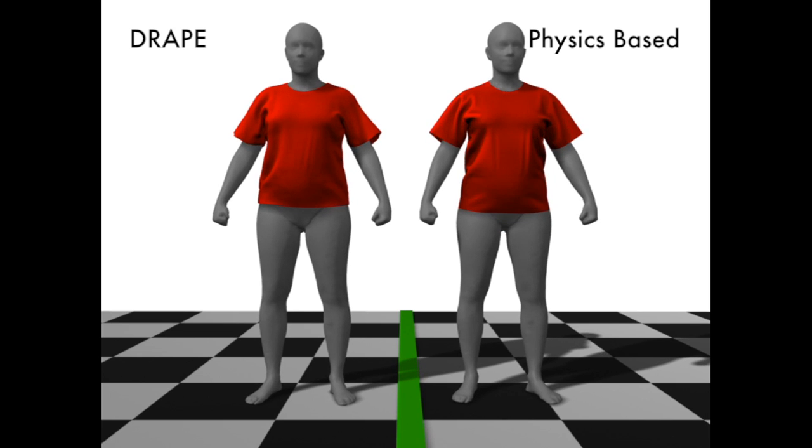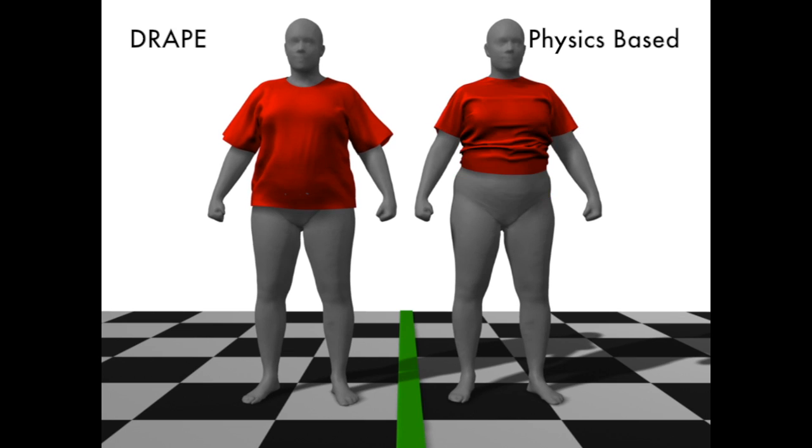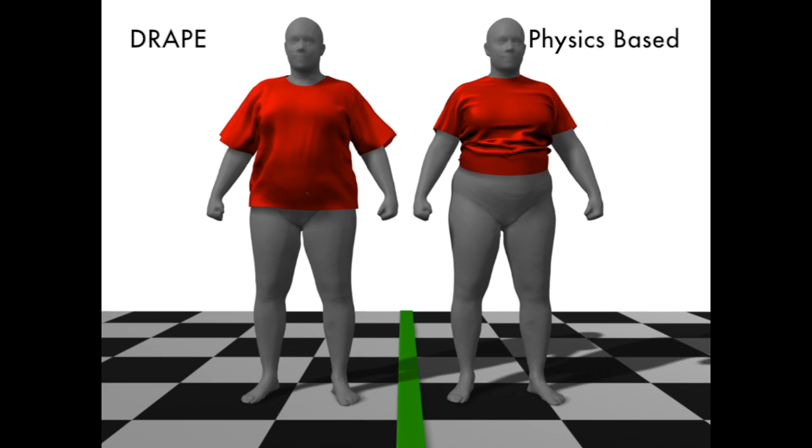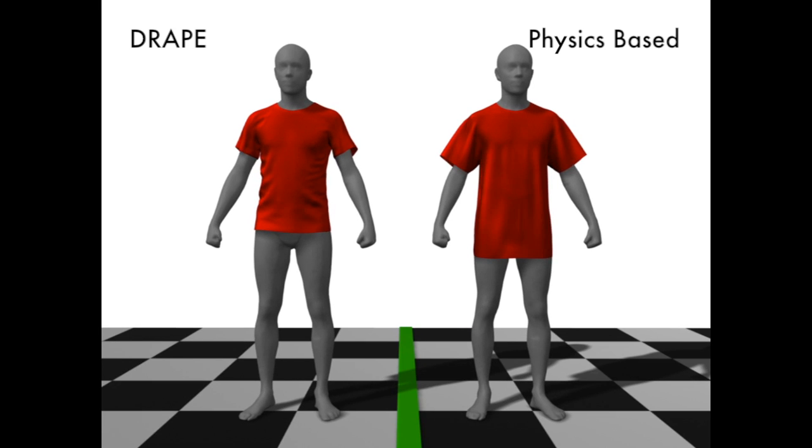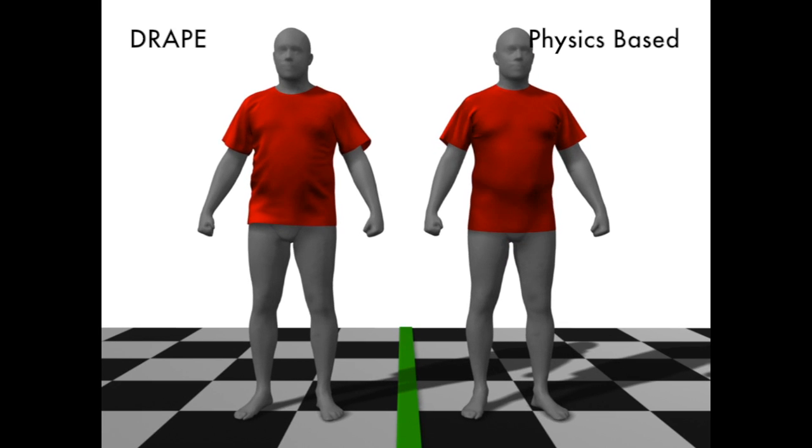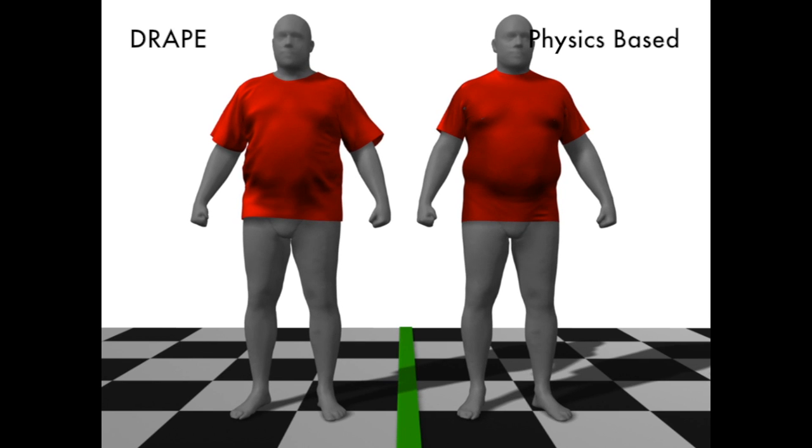Here we dress a gradually changing body shape. Notice how drape automatically adapts to different body shapes, while the physics-based simulation relies on the clothing size chosen by the user.